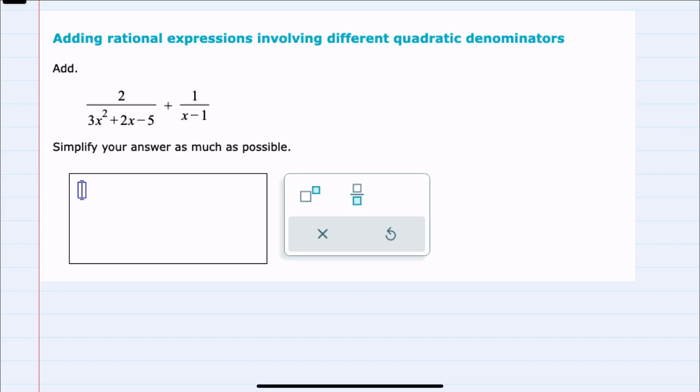In this video I'll be helping you with the Alex problem type called adding rational expressions involving different quadratic denominators. Since we're adding fractions, we know that ultimately we will need to get a common denominator.